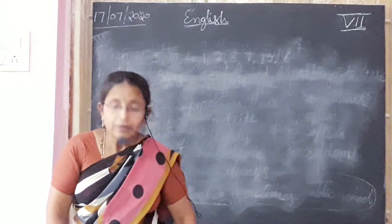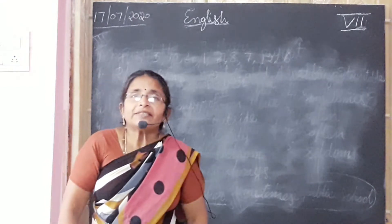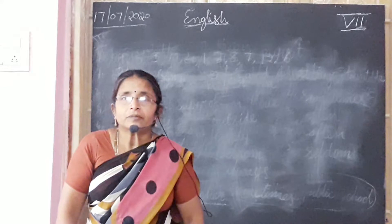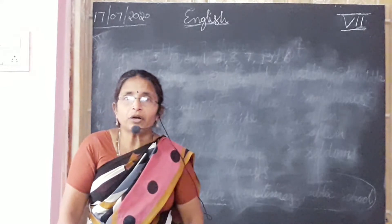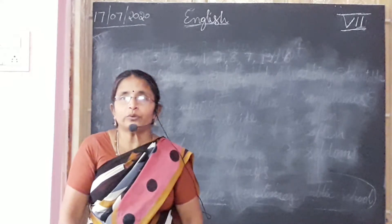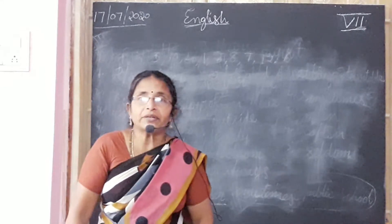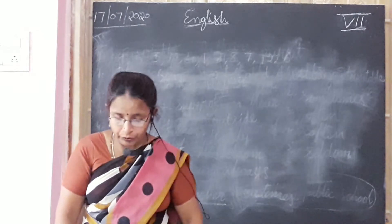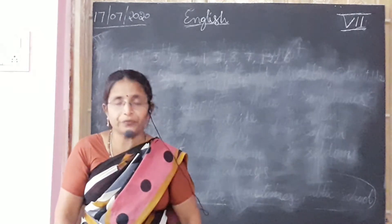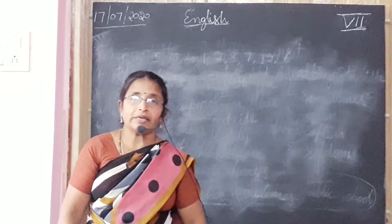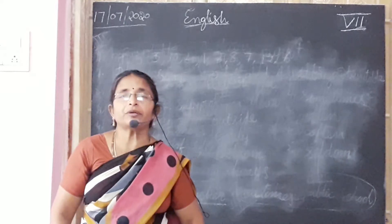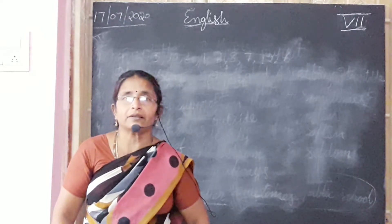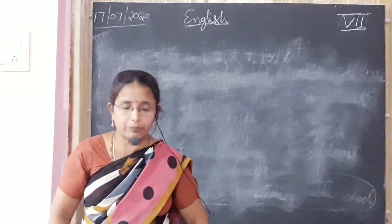Ladies and gentlemen, in previous class we completed 3 units. What we have to do today is we complete our textbook written part. So take your textbooks all of you, take page number 6. Do you remember the first lesson? What is the name of the lesson? The town mouse and the country mouse.